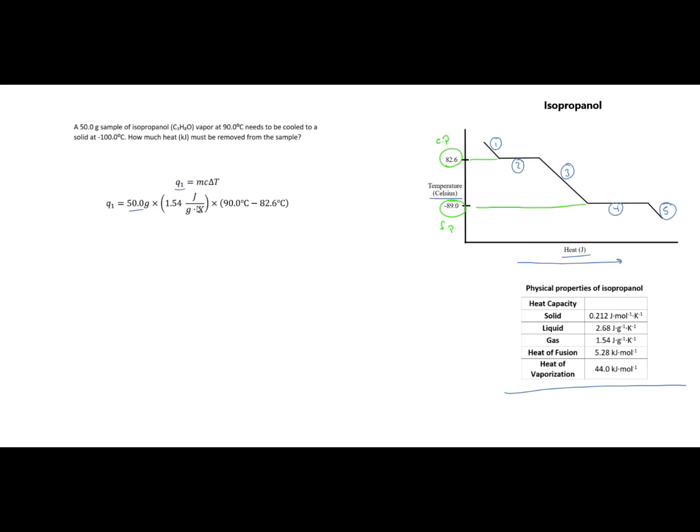This is where having a table is really handy. I need the heat capacity of the gas so I'm going to use 1.54 joules per gram times Kelvin. Then I need my change in temperature. The nice thing about Kelvin and centigrade is in this context I do not have to convert my Celsius to Kelvin. My change in temperature, I'm starting at 90 degrees C and cooling to the condensation point which is 82.6. I just do a little plug and chug and here I get a value for Q1.